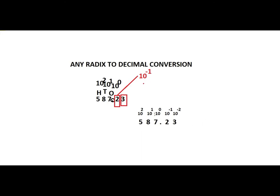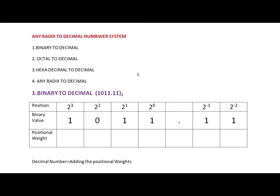The position weight of a decimal number is found by multiplying the digit by its positional power. For example, the position weight of 7 is 7 multiplied by 10 power 0, which is 7. The position weight of 8 is 8 multiplied by 10 power 1, which is 80. The position weight of 5 is 5 multiplied by 10 power 2, which is 500. We multiply the digit by its position power to get the positional weight, then add all the positional weights to get the equivalent decimal number. The same method applies to binary to octal, octal to decimal, hexadecimal to decimal, or any radix to decimal.